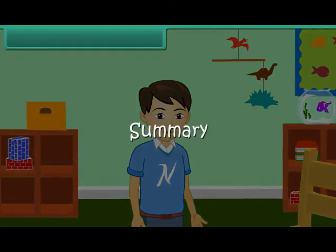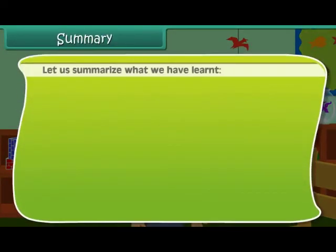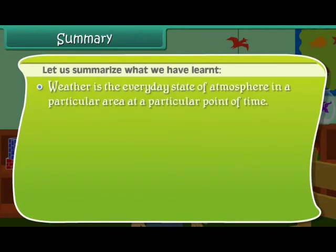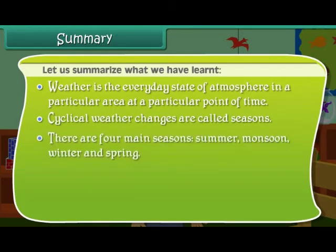Let us summarize what we have learned. Weather is the everyday state of atmosphere in a particular area at a particular point of time. Cyclical weather changes are called seasons. There are four main seasons.